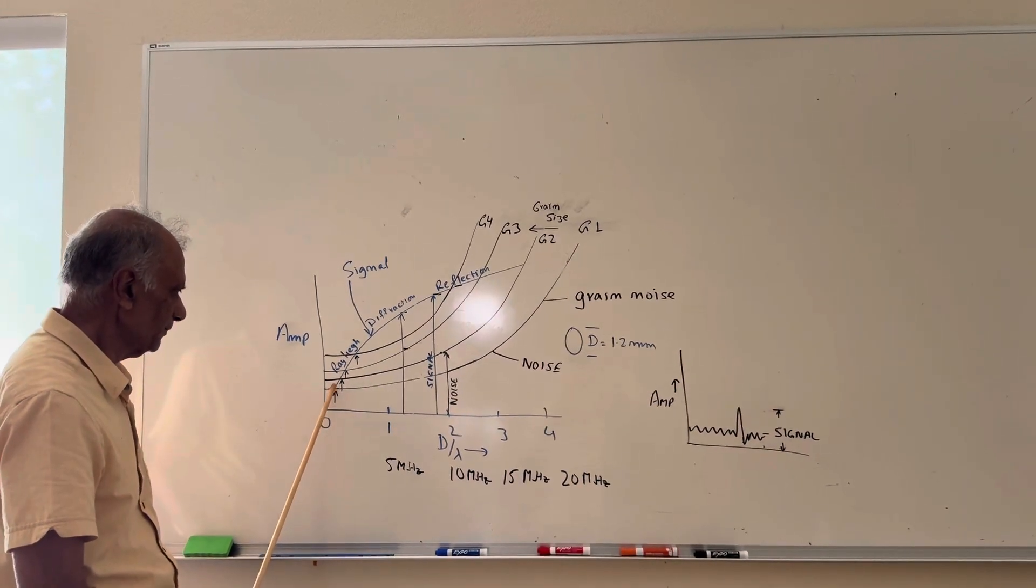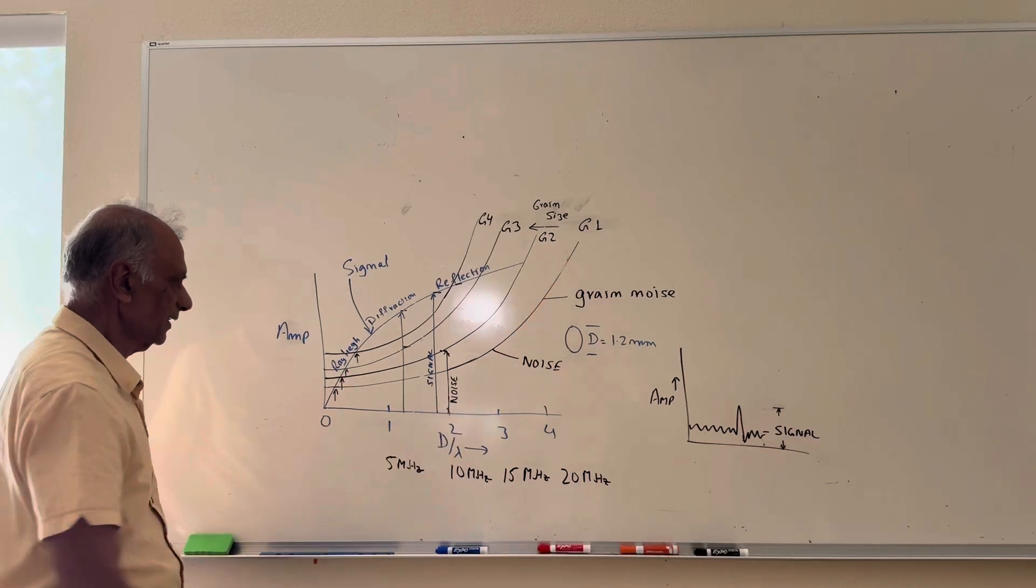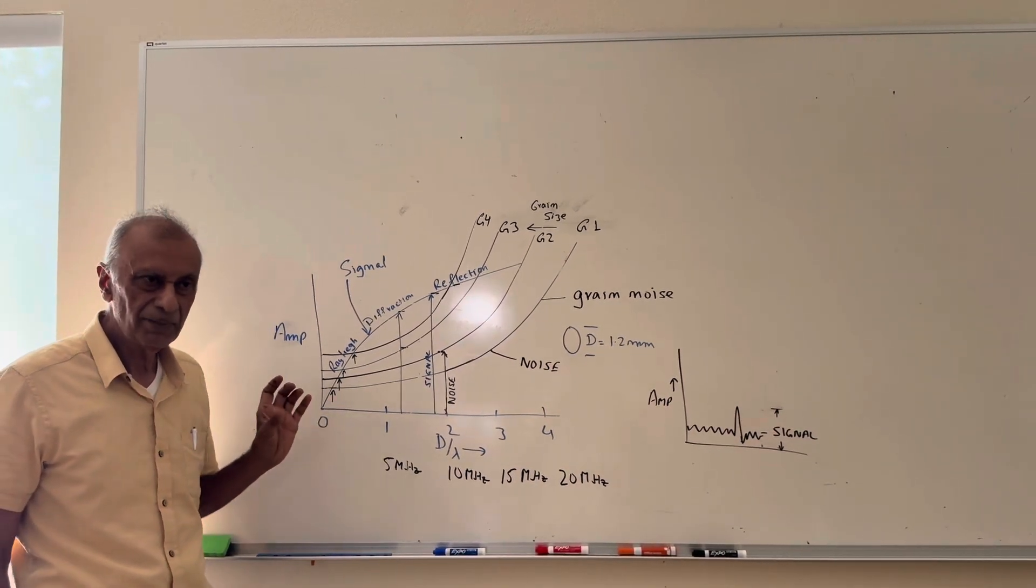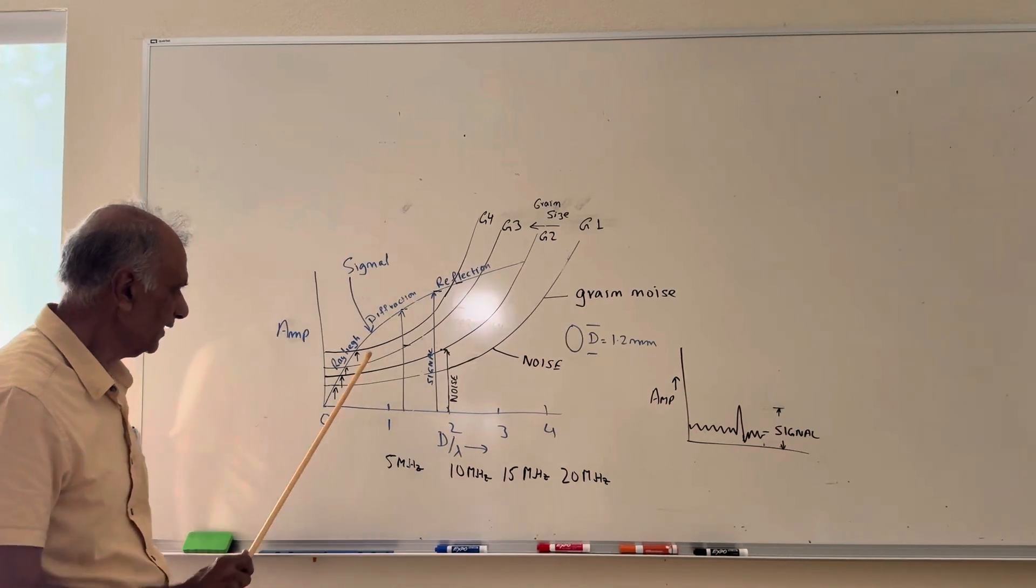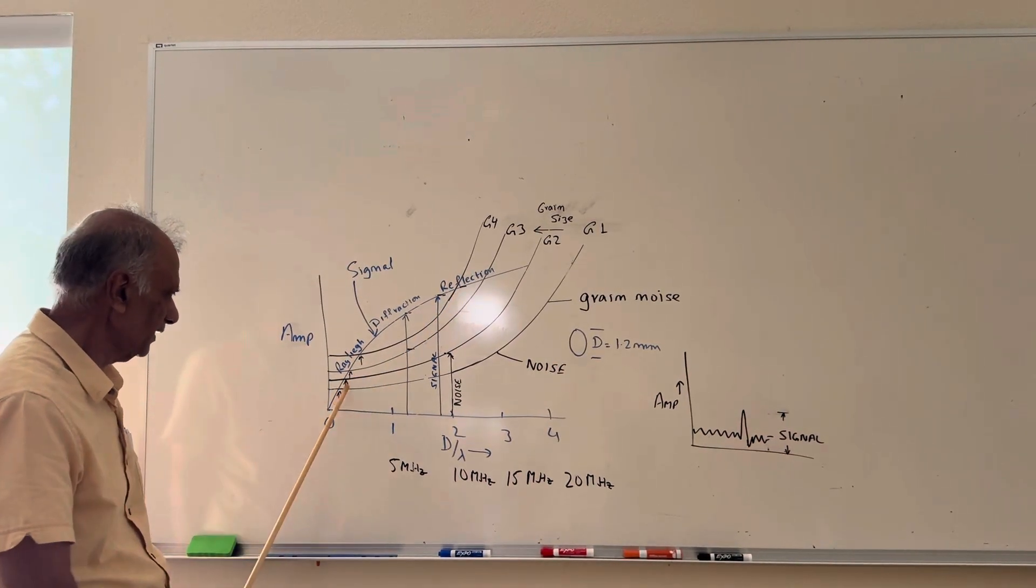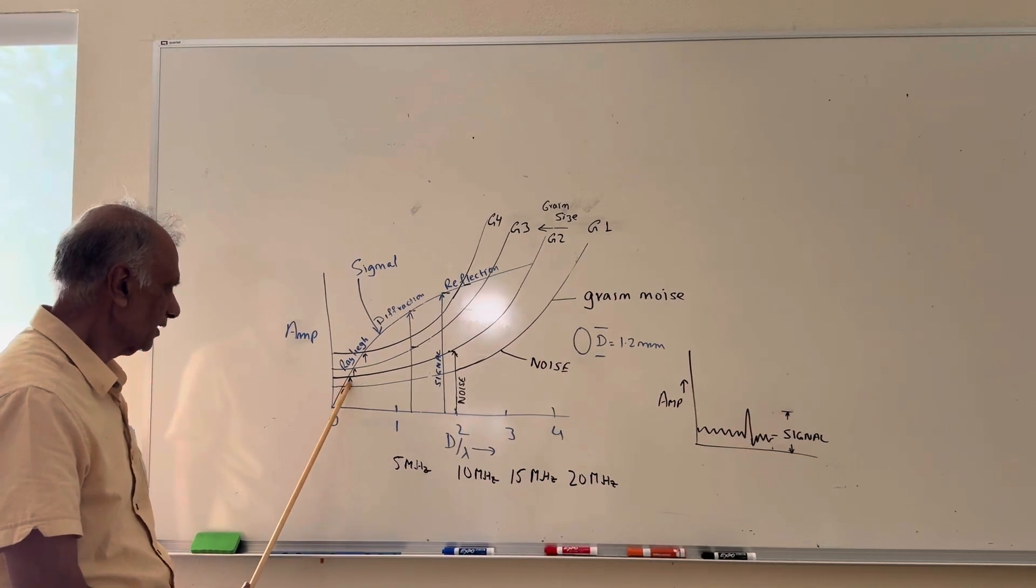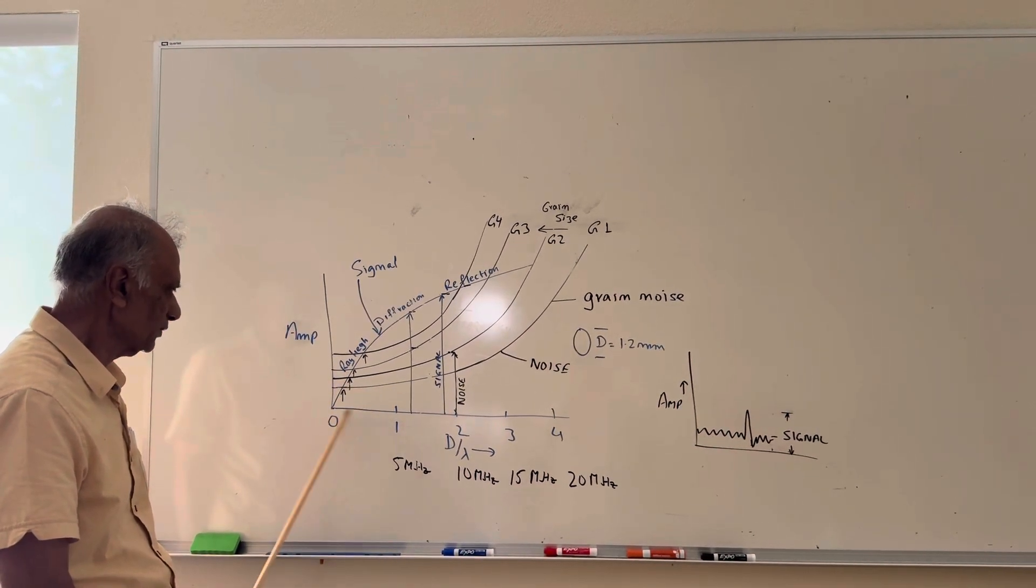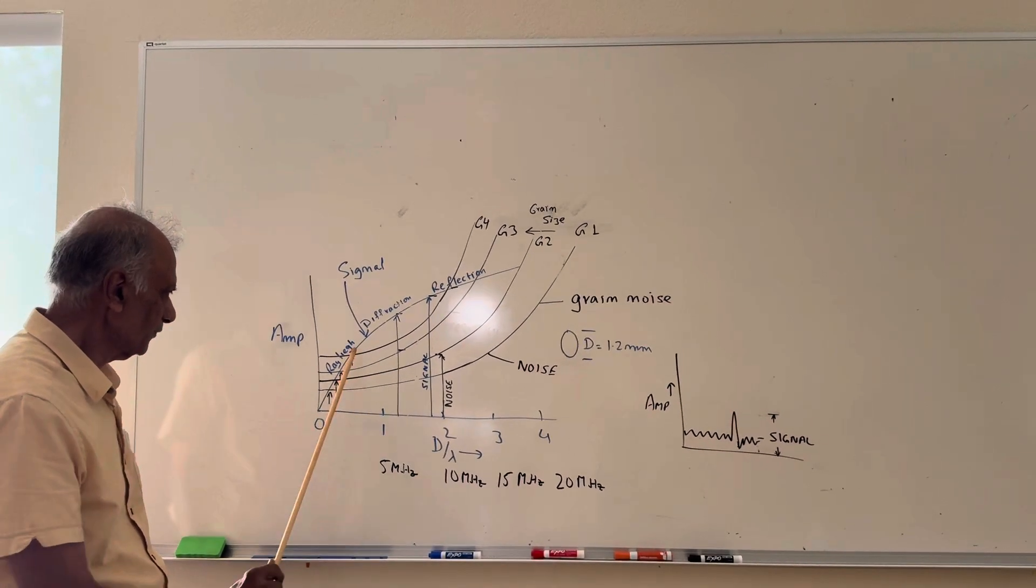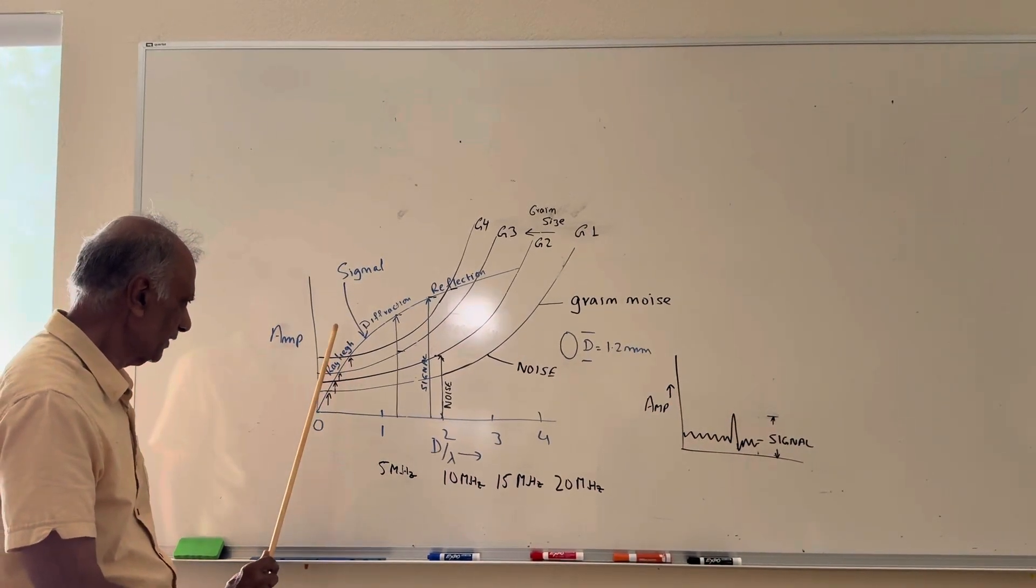Now, what is the smallest flaw that can be detected? It will depend on the grain size. For a grain size of G4, it's going to be here. For a grain size of G3, it's going to be here, and for a grain size of G2, it's going to be right here. So there is no fixed number as far as what is the D over lambda for the minimum detectable flaw size.